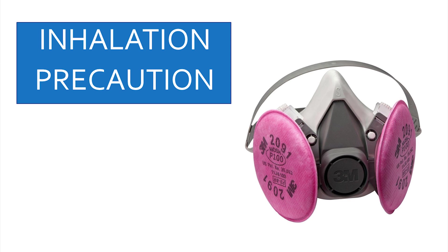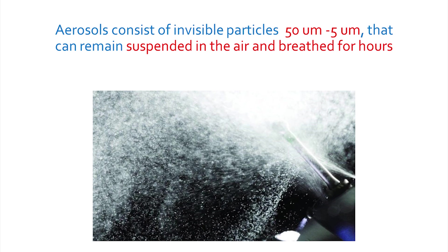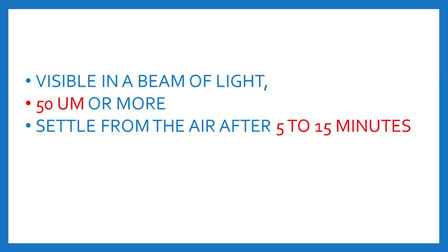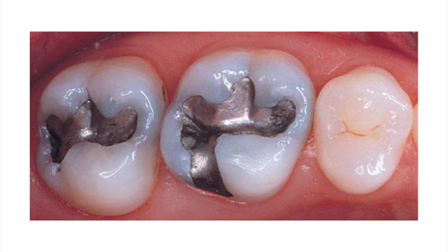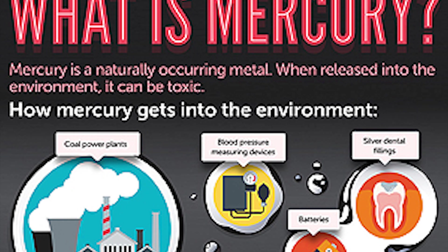When using high speed cutting it is important to take inhalation precautions, as high speed cutting forms aerosols and mist. Aerosols are invisible particles ranging from 500 micrometers to 5 micrometers and remain suspended in air for many hours. Mist is a vapor of particles greater than 50 micrometers and remains suspended for around 15 minutes. Inhaling these can cause respiratory damage. When removing old amalgam restorations, this can also lead to mercury toxicity, which should be prevented by taking proper inhalation precautions.